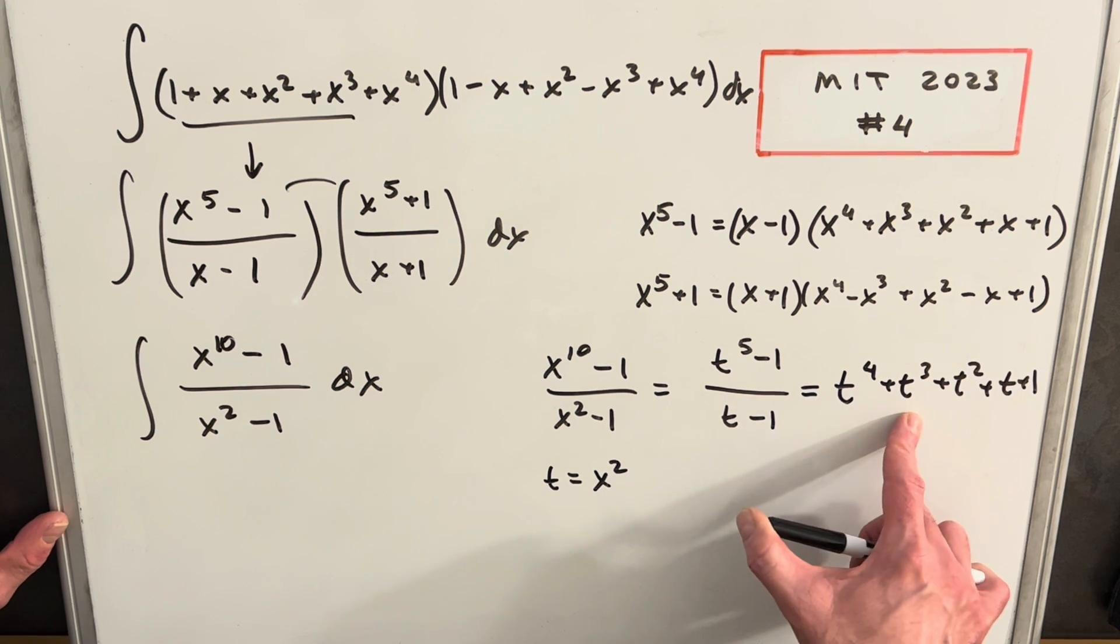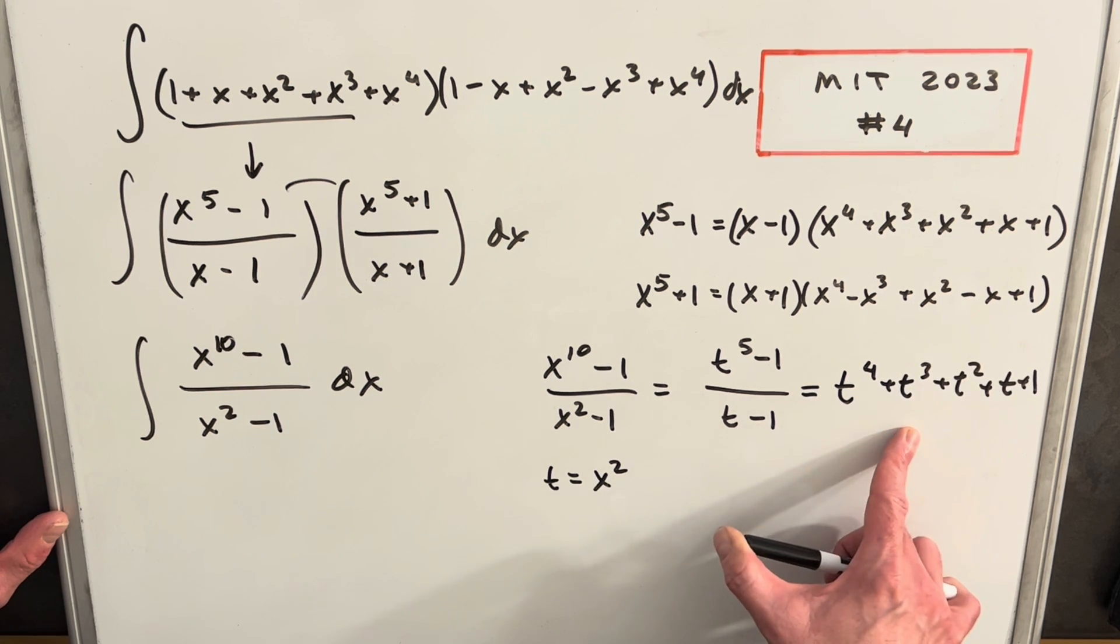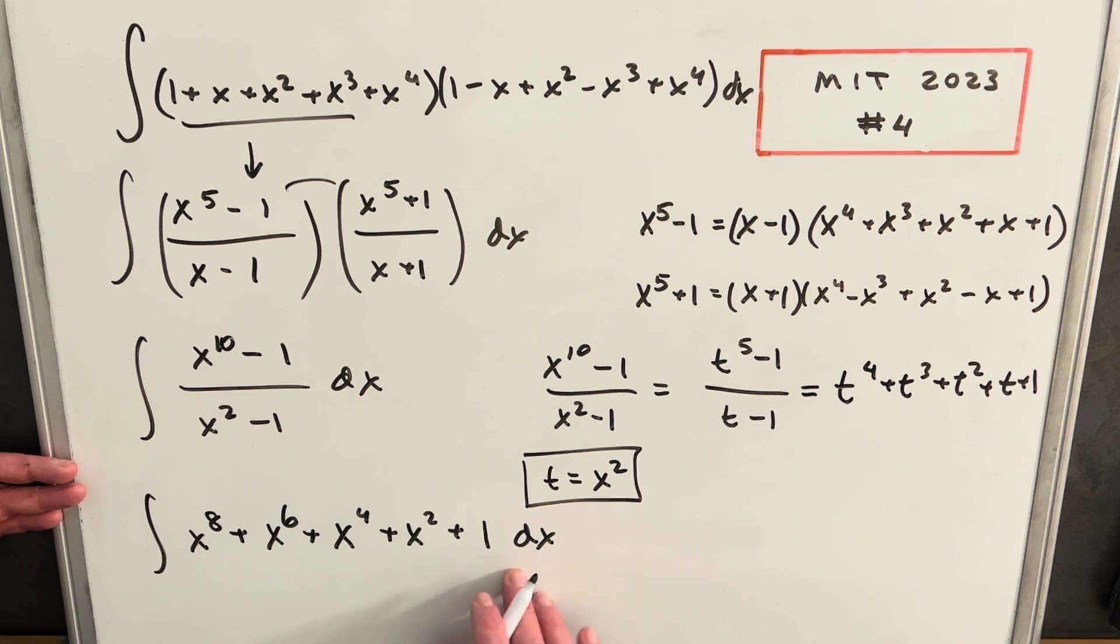So all we need to do is take this polynomial, put it back into x and rewrite it in our integral. So now we just have this long expression, but it's all back in x. And so all we're left to do now is just use the power rule on this—it's going to be pretty easy, but we're just going to write it all out.